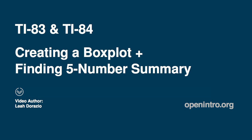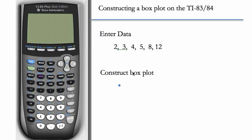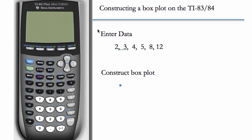In this video, we'll see how to make a box plot and find the five-number summary for a simple data set. Go ahead and grab your TI-83 or TI-84 right now. The instructions for both calculators are identical. Let's enter this data set here.